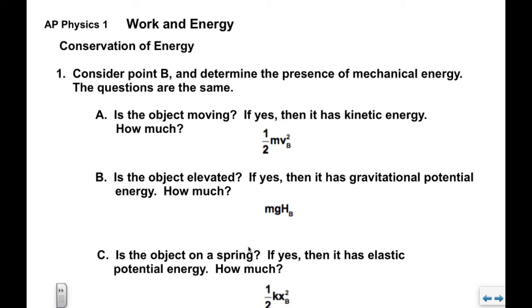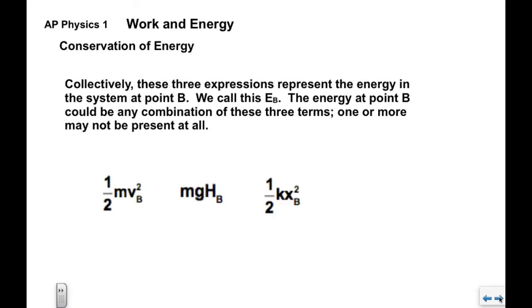If it's on a spring that's stretched or compressed then it has elastic potential one half kx_b squared. So again these three collectively represent the energy at point B. We would call that E sub B. And again we may or may not have one or two or three or none.